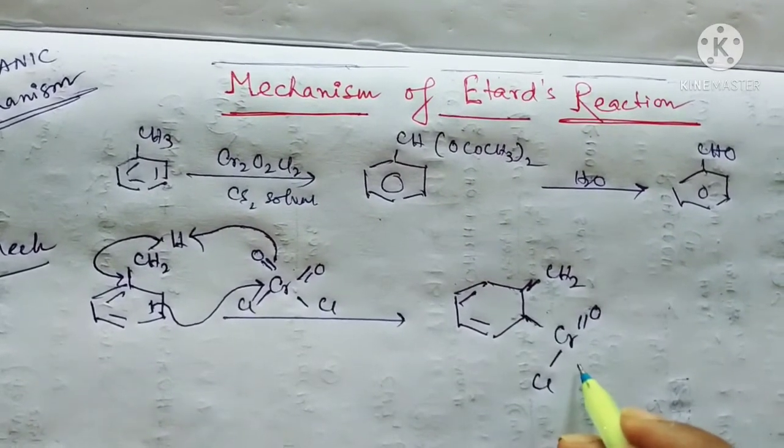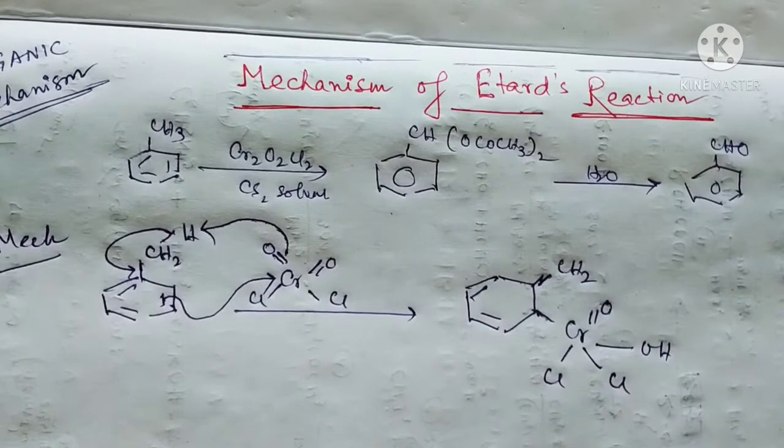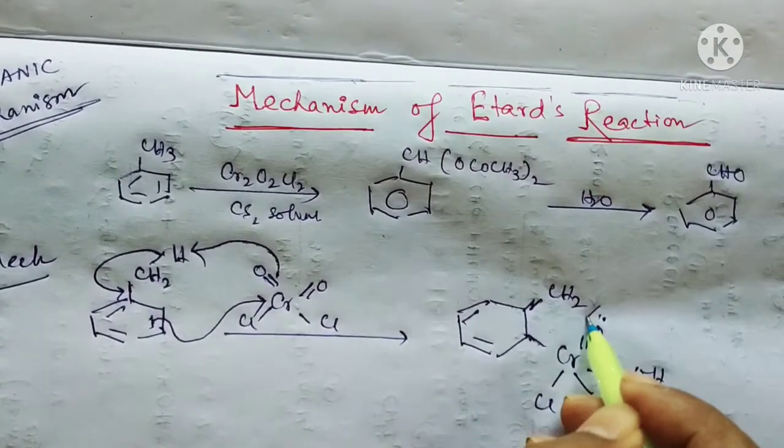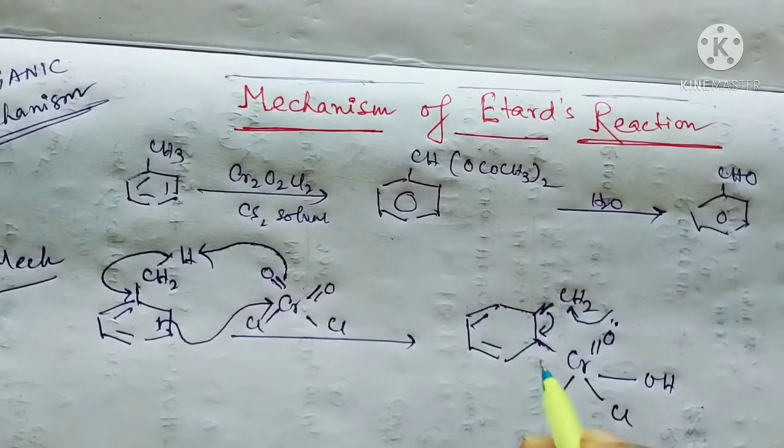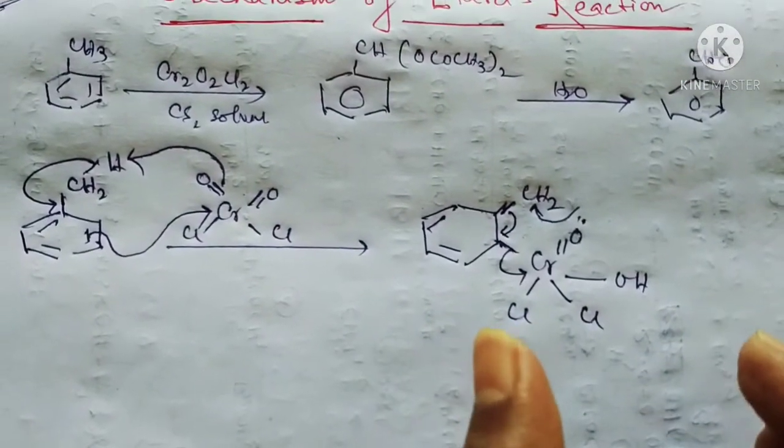Now this is actually the intermediate compound forming. Here, this oxygen, the double bonded oxygen, takes up this CH2, and then this bond breaks, and this bond breaks. This is actually the mechanism.